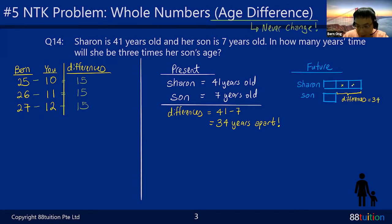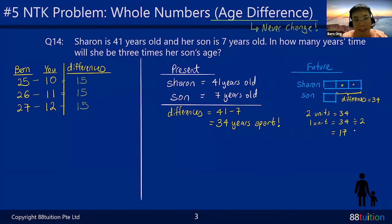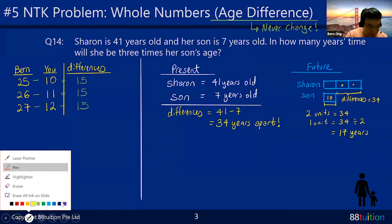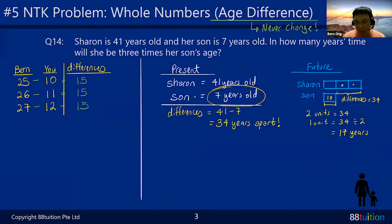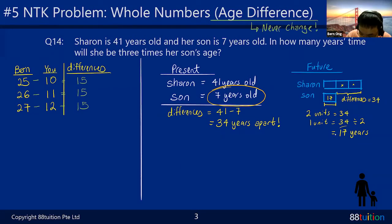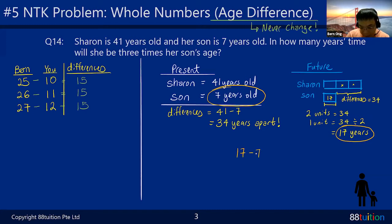Can you see? Those two extra units represent 34 years, so two units equals 34. One unit is 34 divided by 2, which is 17. That means in the future, the son must be 17 years old. The question asks: in how many years' time will this happen? Simple — 17 minus 7 equals 10. In 10 years' time, Sharon will be three times her son's age. That's how you get the answer.